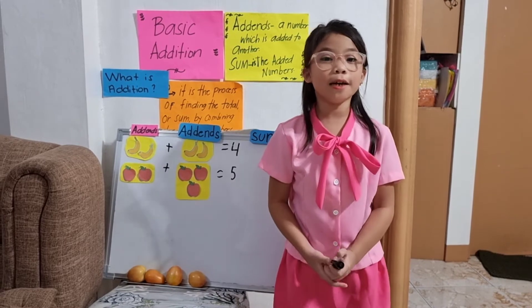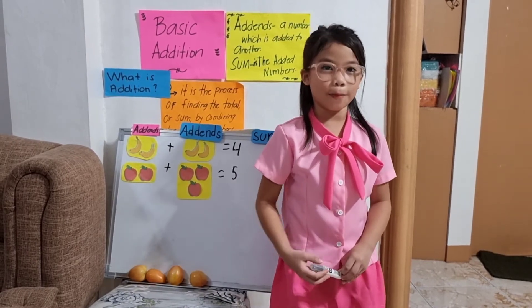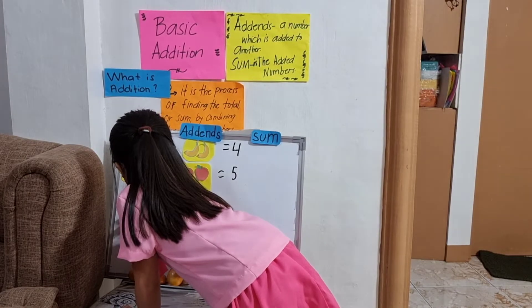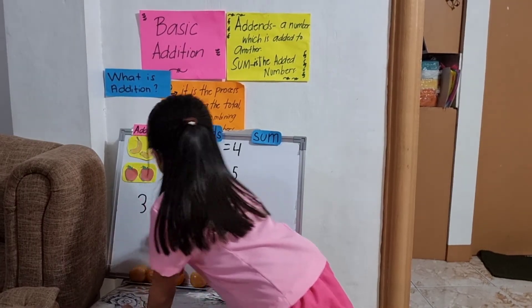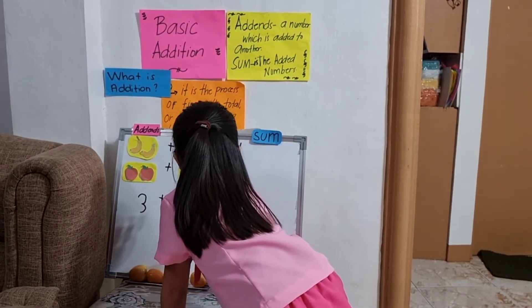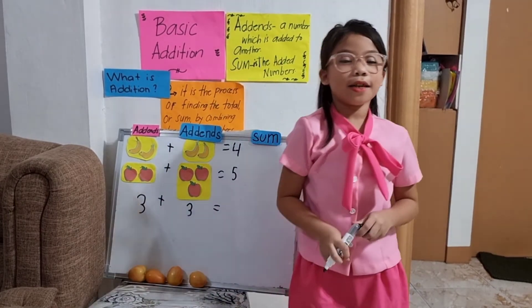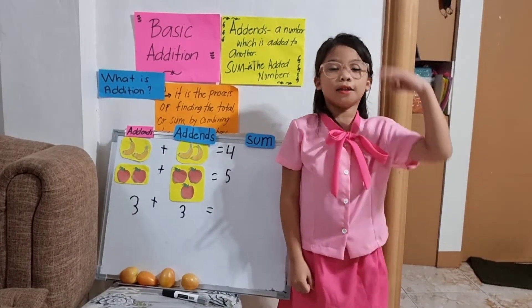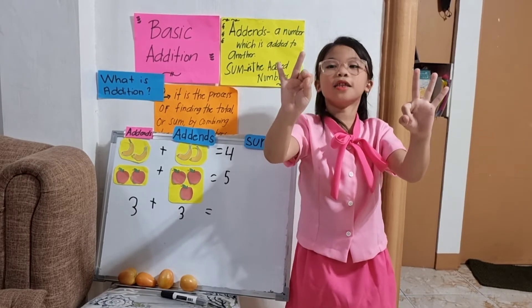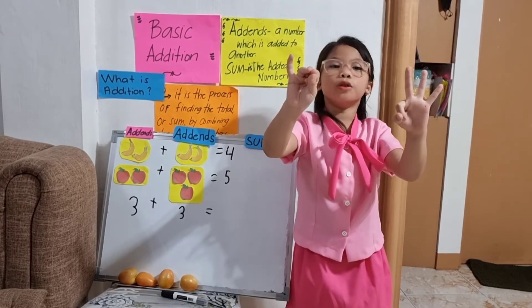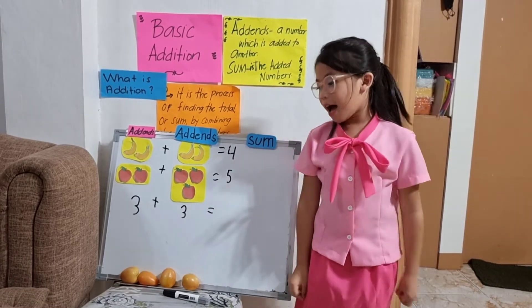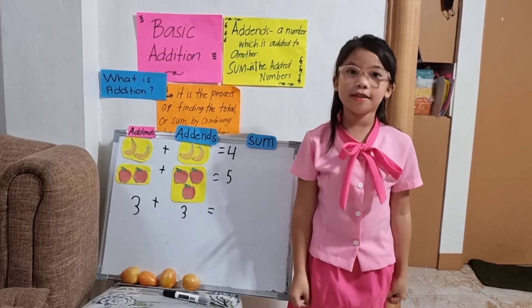I will give you another example. Three plus three equals — let's count: one, two, three, four, five, six. The answer is six.